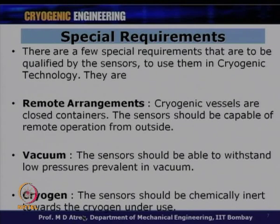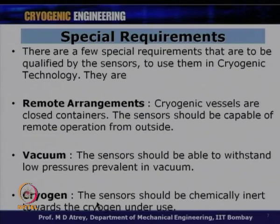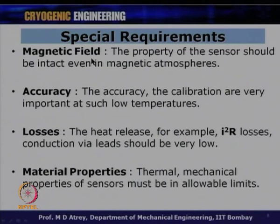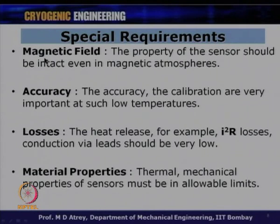The sensor material must be chemically inert toward the cryogen in use—it should not react with liquid nitrogen or liquid hydrocarbons. Some sensors must work in magnetic fields, where sensor properties must remain intact. For example, silicon diodes cannot be used in magnetic field environments—Cernox sensors must be used instead for temperature measurement. This is a critical consideration when designing for magnetic field environments such as MRI.